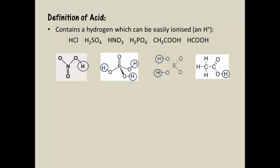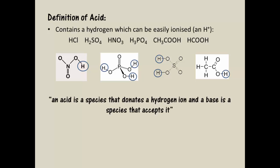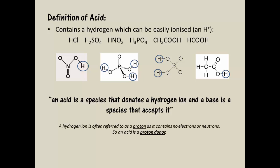So we need a more precise definition of an acid. An acid is a species that donates a hydrogen ion, and a base is a species that accepts it. All acids must have a hydrogen ion which can be given to a base. Note here, a hydrogen ion is often referred to as a proton, as it contains no electrons or neutrons. So we sometimes refer to acids as being a proton donor.